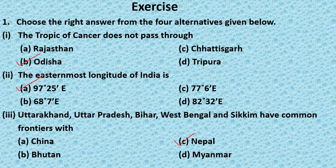Question 1: The Tropic of Cancer does not pass through — Option A: Rajasthan, Option B: Odisha, Option C: Chhattisgarh, Option D: Tripura. Answer: Option B, Odisha.